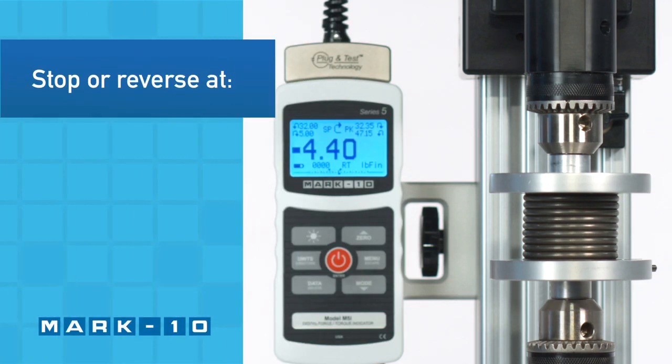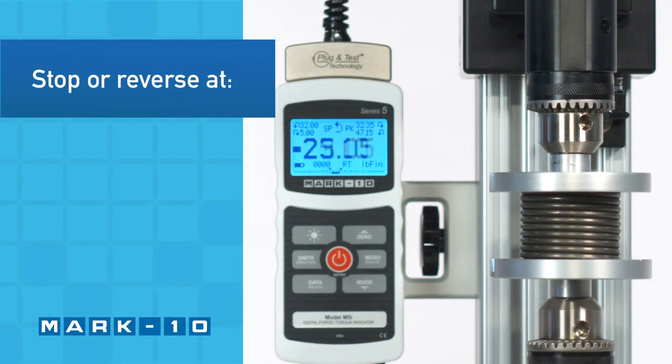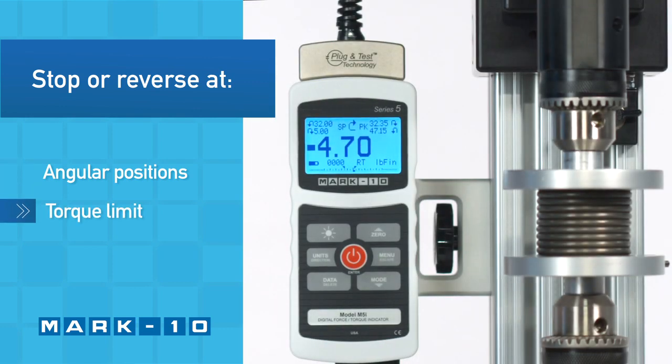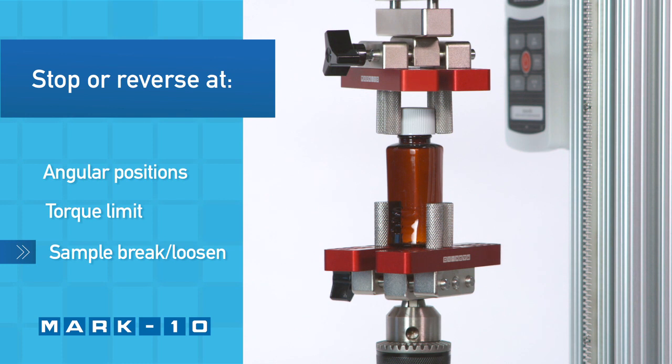The test stand can be configured to automatically reverse or cycle between angular positions when reaching a torque or when the sample has broken or loosened.